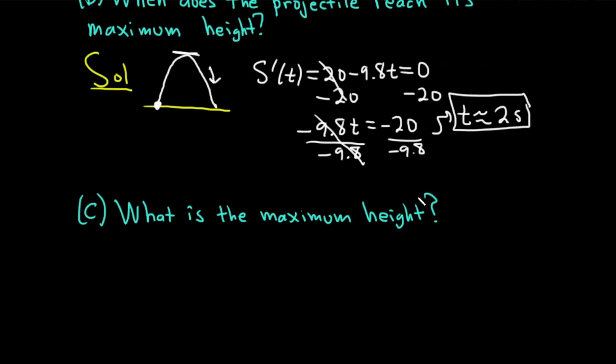Part c, what is the maximum height? Let's work through this one's solution. So we know that the maximum height occurs when t is about 2 seconds. So to find the maximum height, we have to use our position function.